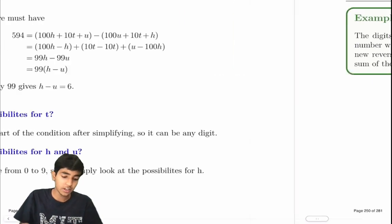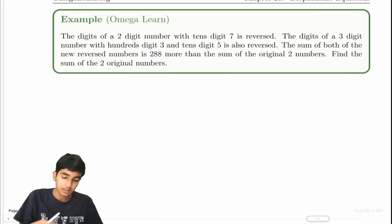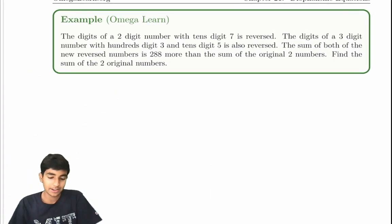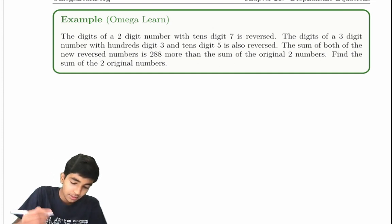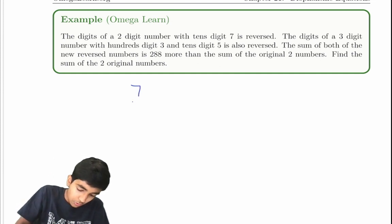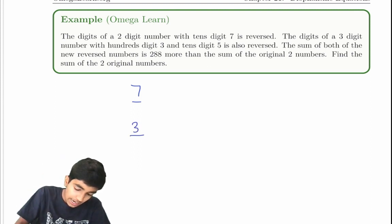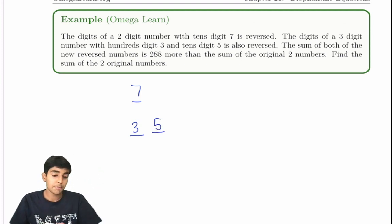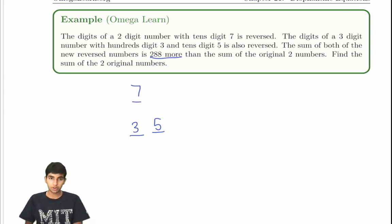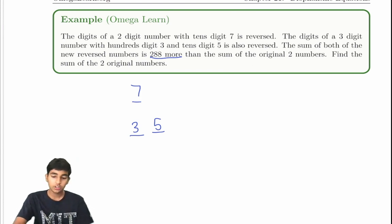A common type of Diophantine equation are digit problems. Let's take a look at some digit problems in Diophantine equations. The digits of a two-digit number with tens digit seven is reversed. The digits of a three-digit number with hundreds digit three and tens digit five is also reversed. The sum of both the new and reversed numbers is 288 more than the sum of the original two numbers. Find the sum of the original two numbers.